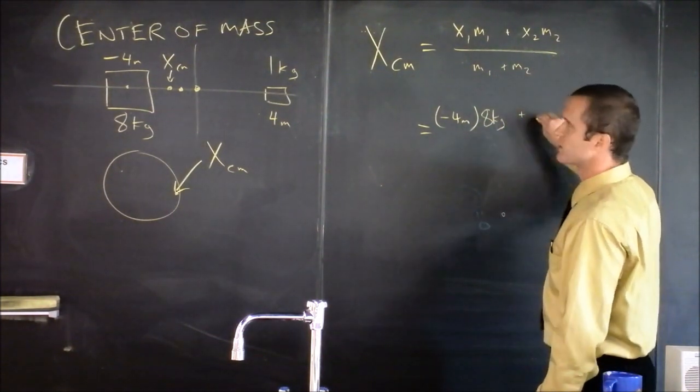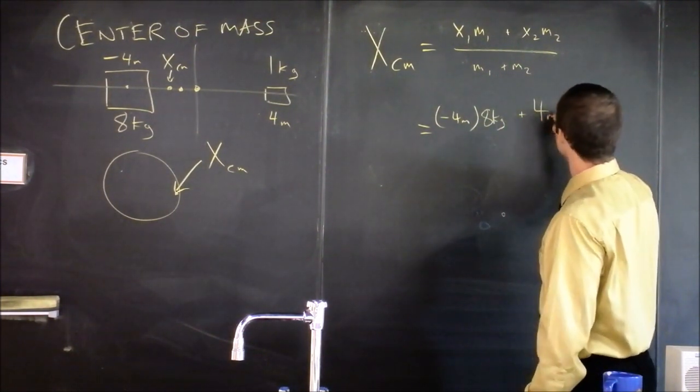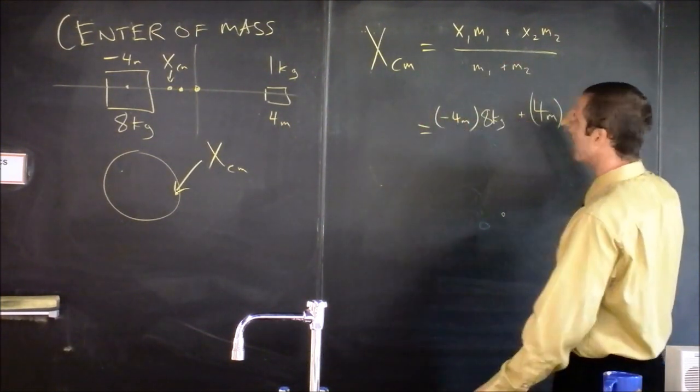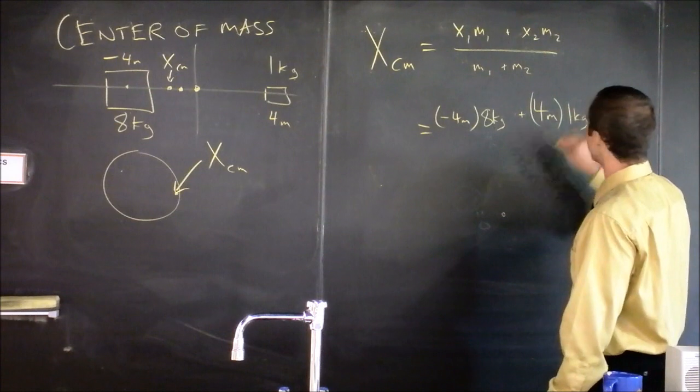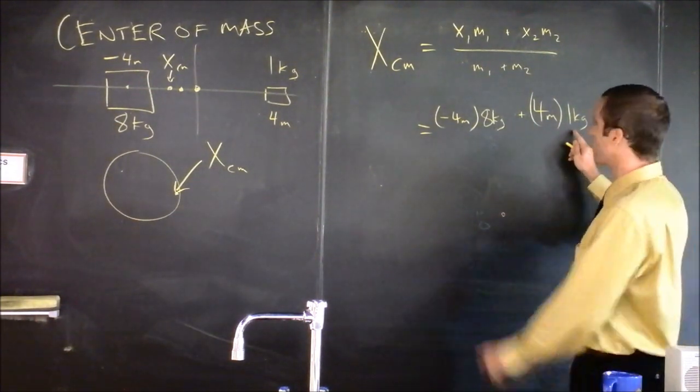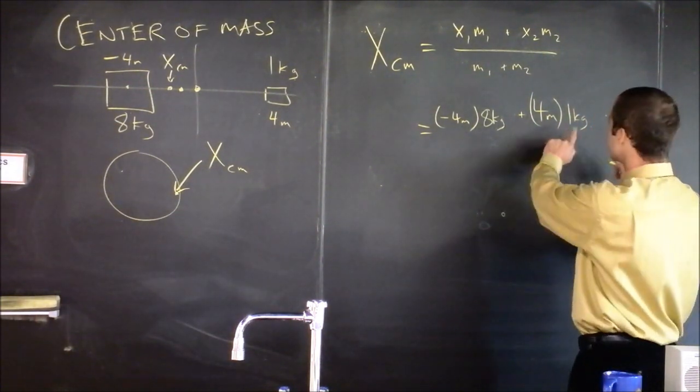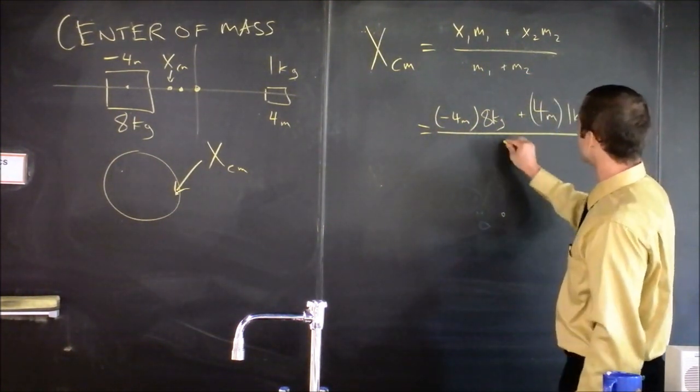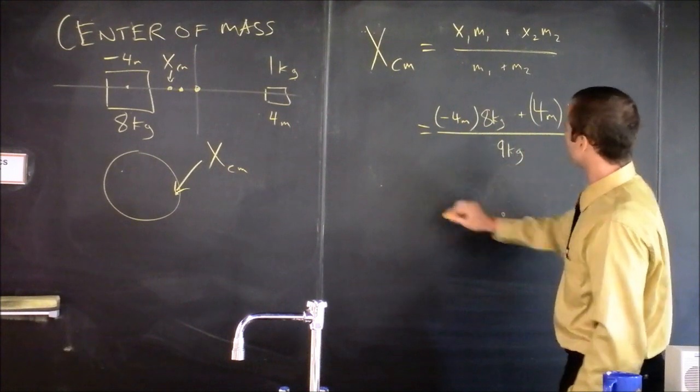And then I want to add on the position of mass 2 which is at positive 4 meters and multiply that by the mass of m2 which is 1 kilogram. Notice it has a weaker weighting in the equation. It is less significant because it has significantly less mass. And then we're going to divide this by the total mass which in our case is 9 kilograms.